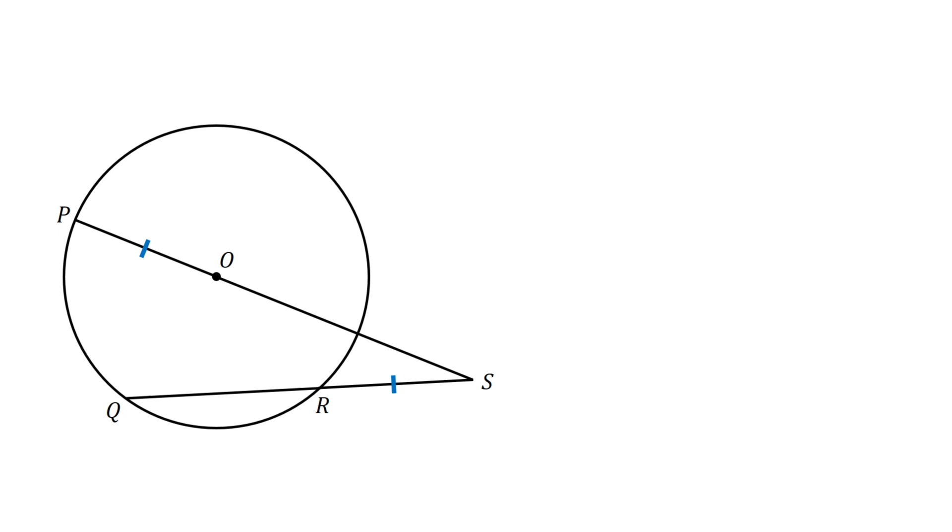Suppose that the line RS equals the line OP. Angle PSQ equals 24 degrees and angle POQ equals theta. Our goal is to find theta.